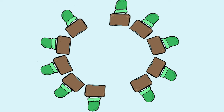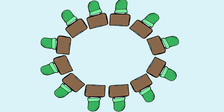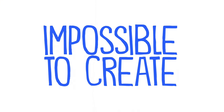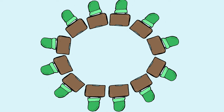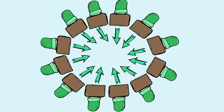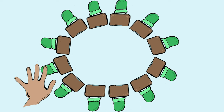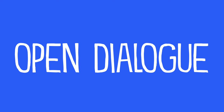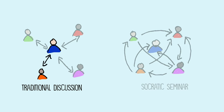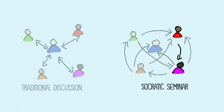Typically, students sit in a circle or more likely an oval — because perfect circles are next to impossible to create. Here they face one another. There's no need to raise hands or call on names. This is an open dialogue. Unlike a traditional classroom discussion where most questions and answers run through the teacher, a Socratic seminar is interconnected.